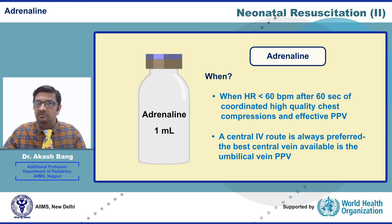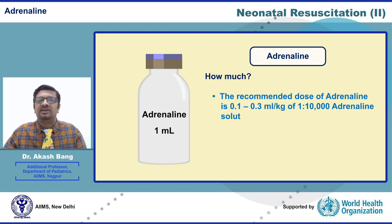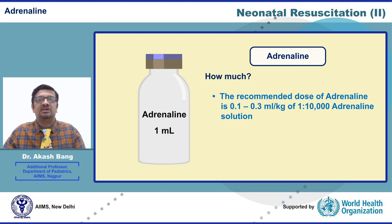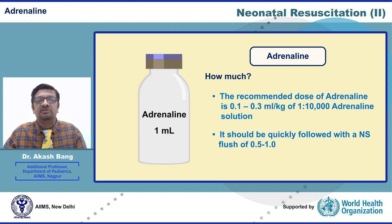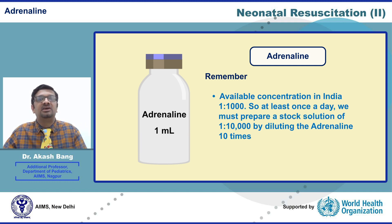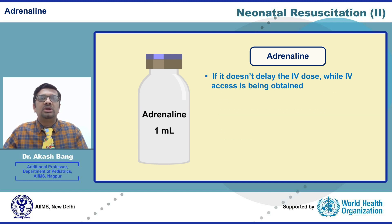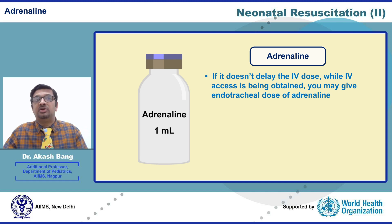A central IV route is always preferred, and the best central vein available in the neonatal scenario is the umbilical vein. The recommended dose of adrenaline is 0.1 to 0.3 ml per kg of 1-in-10,000 adrenaline solution, quickly followed by a normal saline flush of 0.5 to 1 ml. Note that the available concentration in India is 1-in-1,000, so at least once a day we must prepare a stock solution of 1-in-10,000 by diluting adrenaline 10 times.